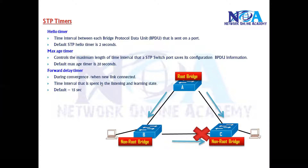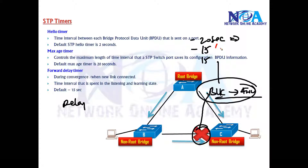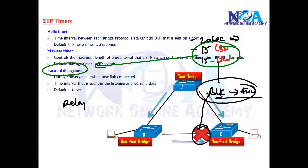The forwarding delay is actually a delay timer. When we are assigning a blocking port to a forwarding port, it is going to wait in blocking state for maybe 20 seconds if it is an indirect link, and the next 15 seconds it will go to listening and learning states. These listening and learning states are called the forwarding delay timer. The switch is not going to assign the port immediately to forwarding; instead it is going to wait for some time.